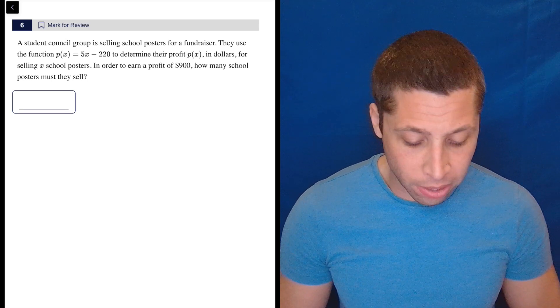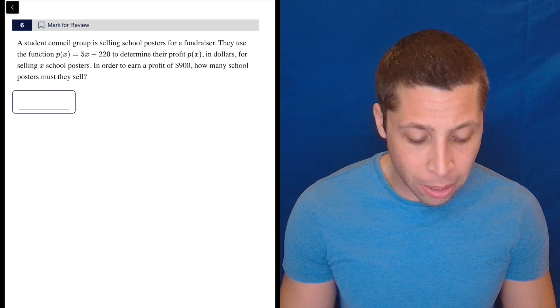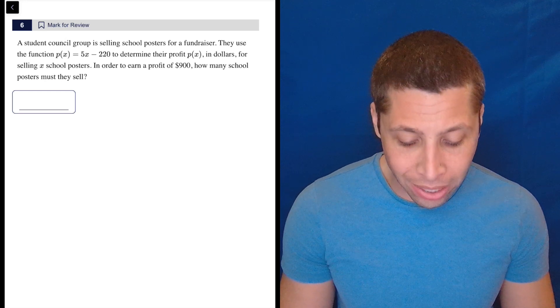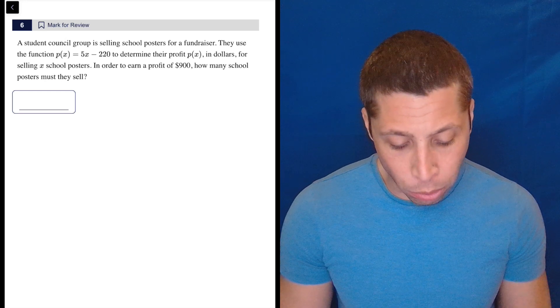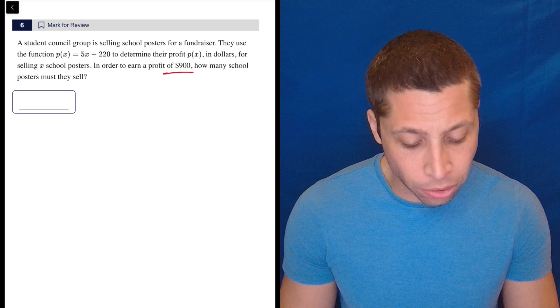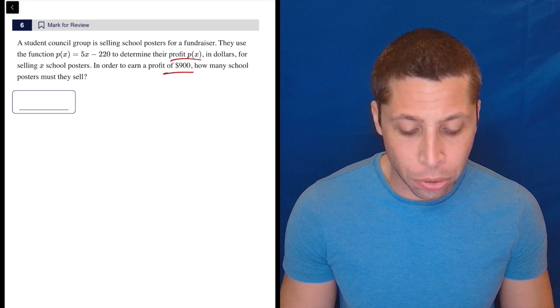They use the function P of X equals 5X minus 220 to determine their profit P of X in dollars for selling X school posters. In order to earn a profit of $900, so that's your P of X, how many school posters must they sell?